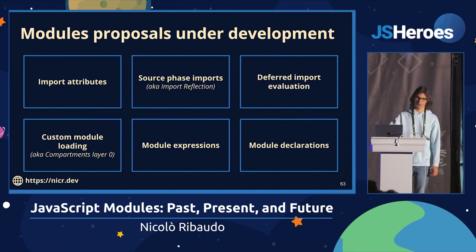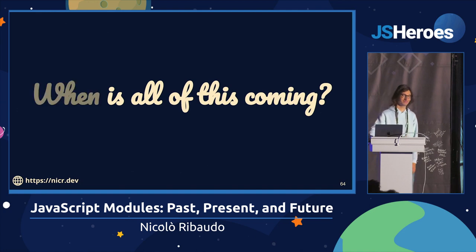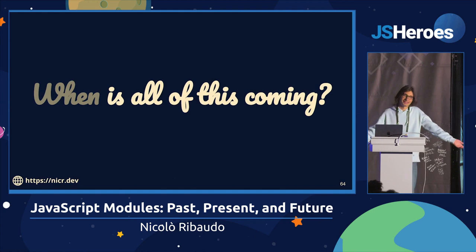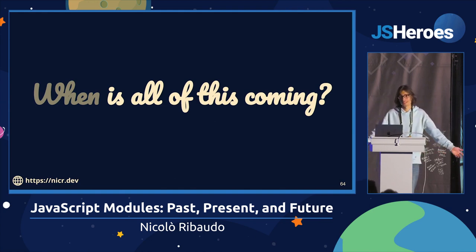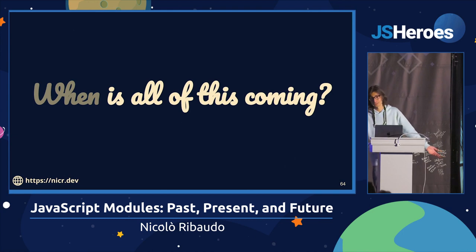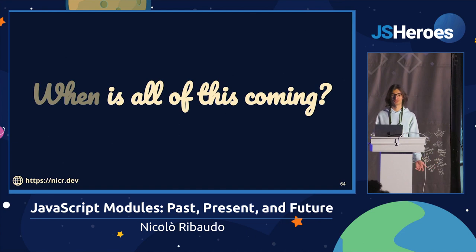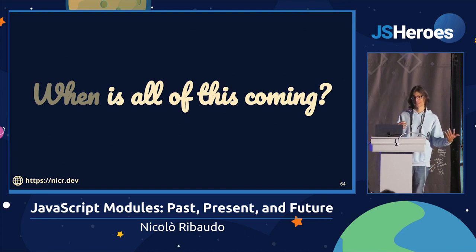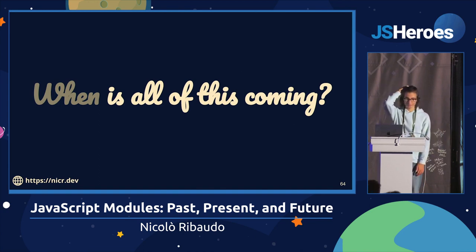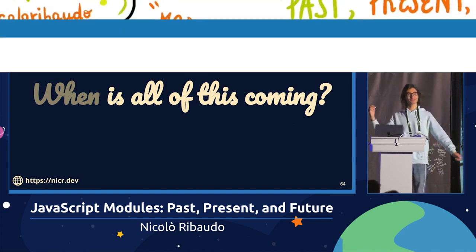And that's it — six proposals that maybe we will see one day. Some of them will be in browsers maybe at the end of this year. Others will need multiple years — maybe five, or if we're lucky, two. I'm sure ECMAScript modules will change, improve, and become much easier to use. We just don't know exactly when or how this will happen. Thanks for listening.